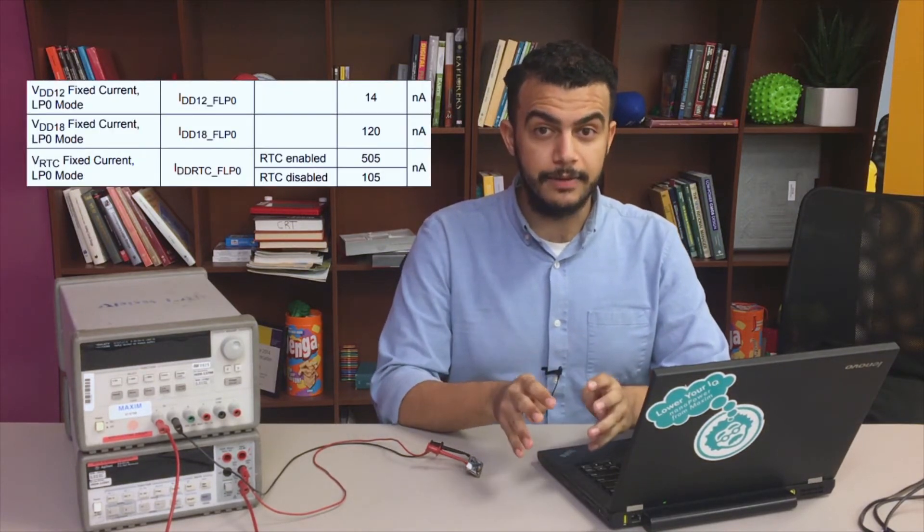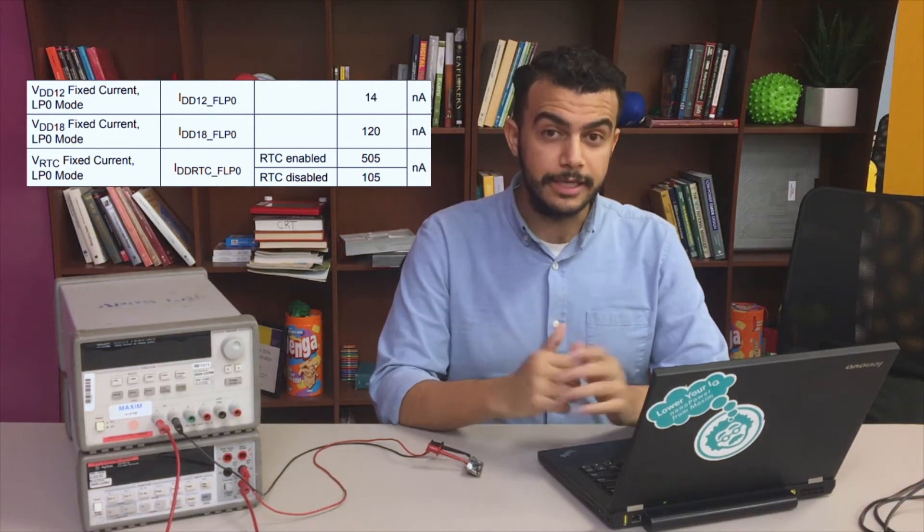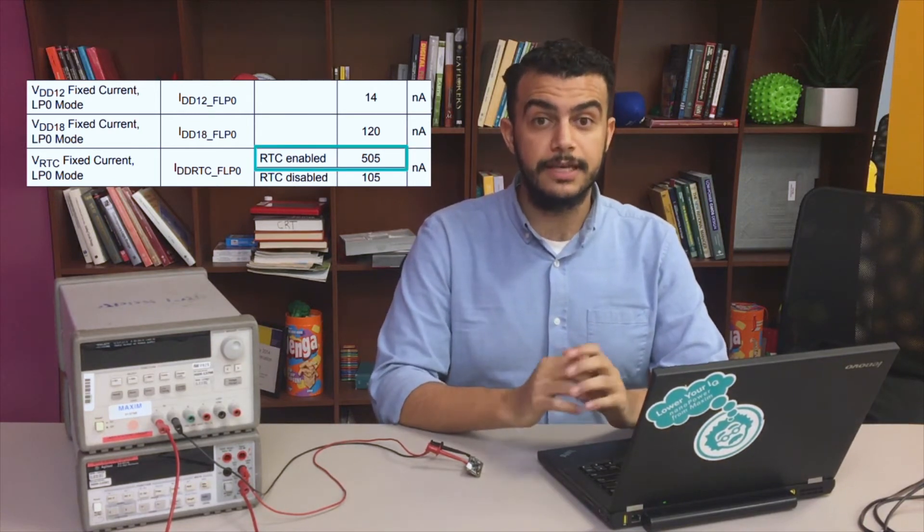It has a dedicated supply for the clock that typically consumes 500 nanoamps in LP0 mode. It can also recognize button presses so I can wake it up with a GPIO input, display the time, and then go back to sleep and maintain as much power savings as possible.